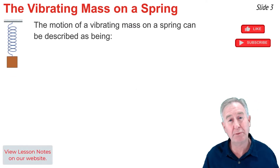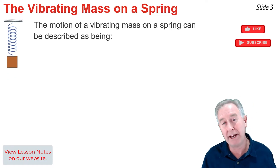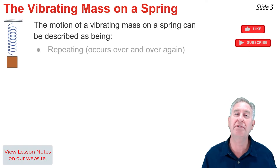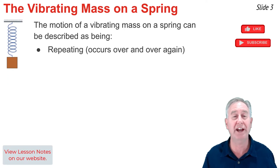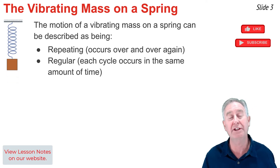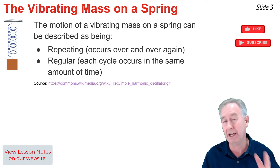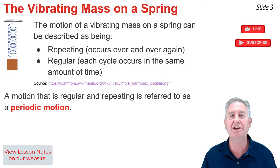This mass on the end of a spring is vibrating back and forth about a fixed position. When I think about how to describe it, two words come to mind. First, its motion is repeating — it occurs over and over again, cycle after cycle. And second, its motion is regular — it occurs in the same amount of time, cycle after cycle. Any object whose motion can be described by these two words, repeating and regular, is an object that's undergoing periodic motion.